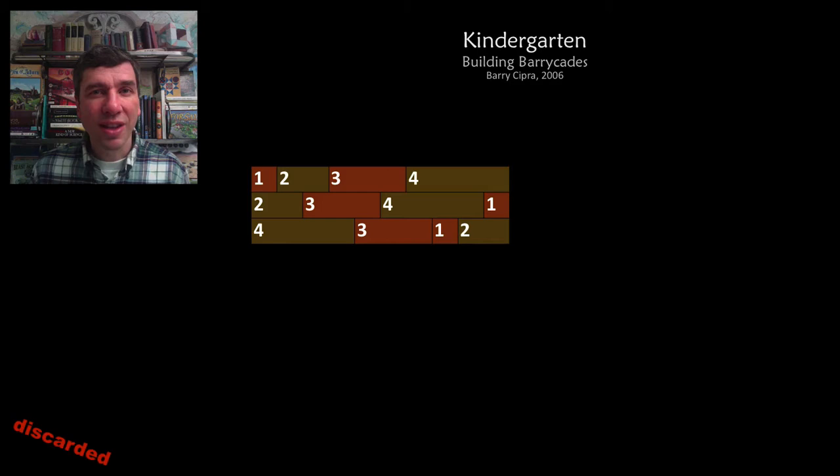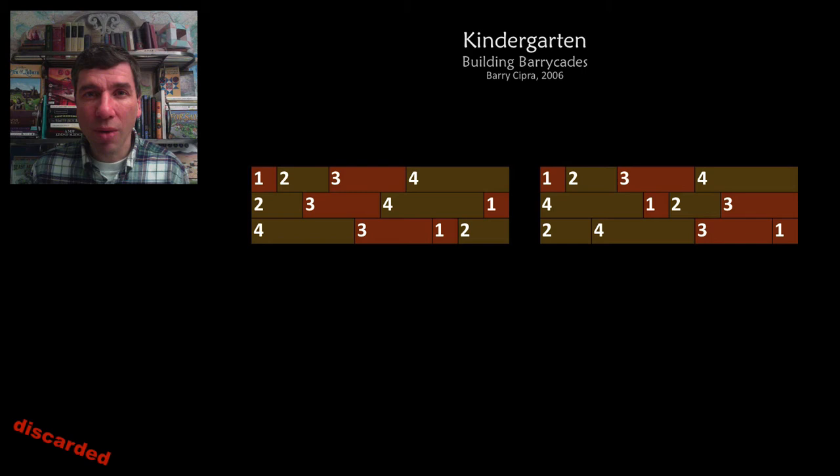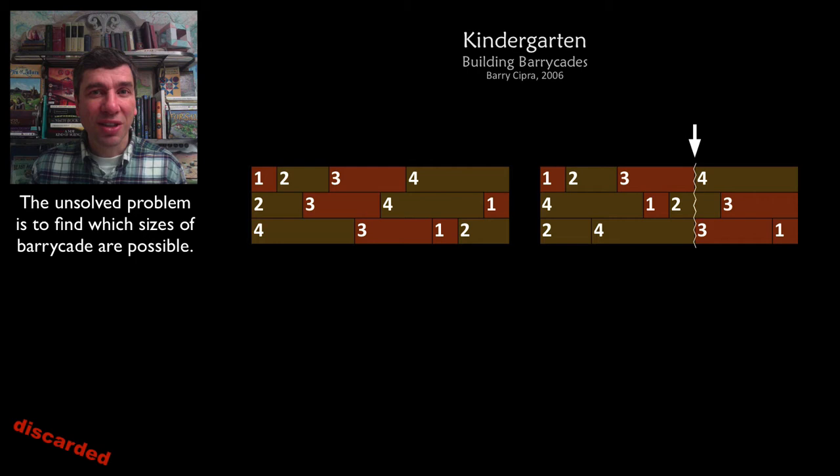One of the ones that was discarded was this one, building barricades. Here we have logs of length 1, 2, 3 and 4 in each row, and you have to build a barricade. This one works, but this one does not. Why? Because you can see that there are two joins that are vertically aligned. That's not acceptable.